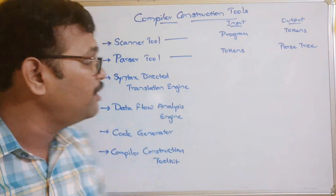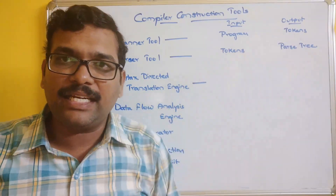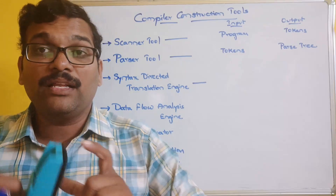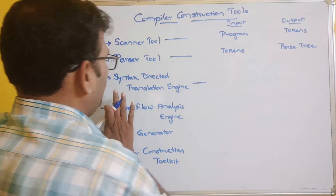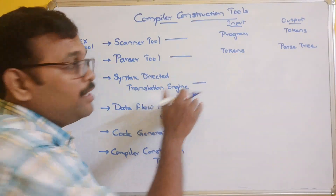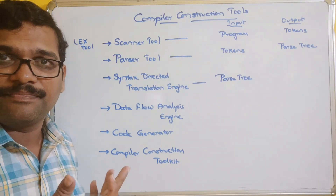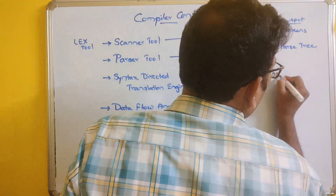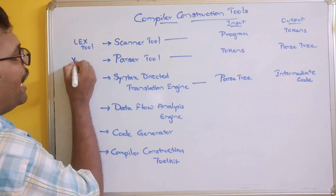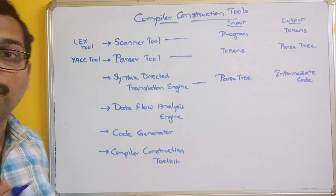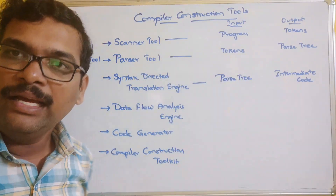Once the parse tree has been generated, the next tool is the syntax-directed translation engine. It will have a lot of functions that walk through the parse tree and generate intermediate code, verifying whether the code is syntactically and semantically correct. So the input is the parse tree and the output is the intermediate code. The example tool for the parser is the Yacc tool, and in further sessions we will discuss these tools in detail.